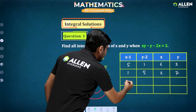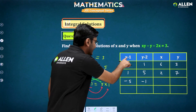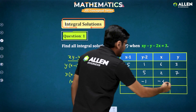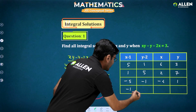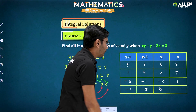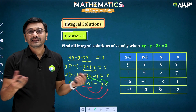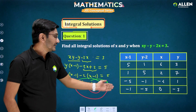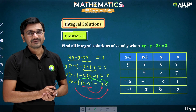Yes — if you factorize 5 as minus 5 times minus 1, you'll get a few more solutions, but those will be negative. If x minus 1 equals minus 5, then x equals minus 4, and y minus 2 equals minus 1 gives y equal to 1. So another solution is (−4, 1). Switching these gives x equal to 0 and y equal to minus 3, so (0, −3) is another solution. These are all four integral solutions. You can verify by substituting back into the original equation.